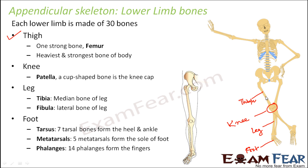The thigh is made up of one single bone called the femur. Femur is the heaviest and strongest bone of the body — please remember this. The smallest bones are the ear ossicles, while the strongest and heaviest is the femur in the thigh. In the knee, you have one cup-shaped bone called the patella, which is the knee cap — a bone that covers the knee.